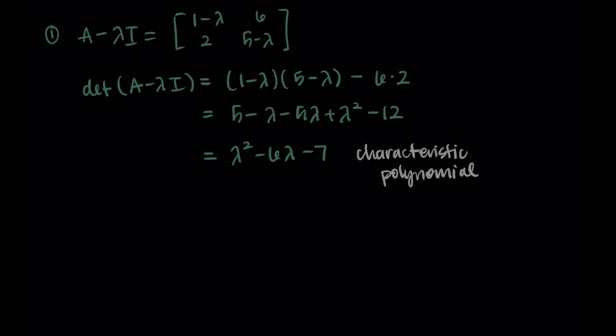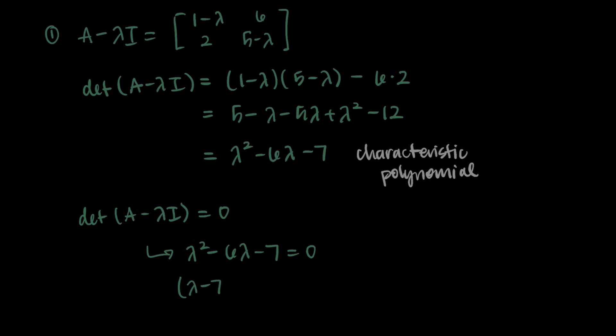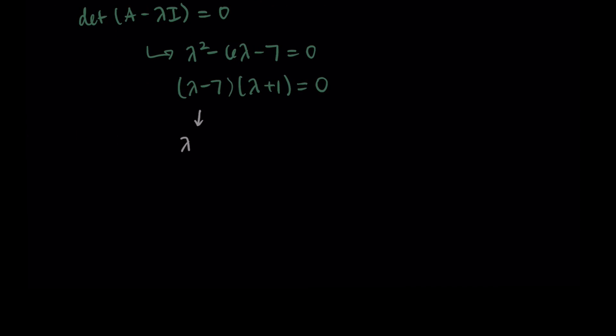Our goal is to find the eigenvalues, so we're going to take this characteristic polynomial and set it equal to zero: lambda squared minus 6 lambda minus 7 equals zero. Factoring this, I get lambda minus 7 times lambda plus 1. Setting each of these terms equal to zero results in our two eigenvalues: lambda equals 7 and lambda equals negative 1. So we have two distinct eigenvalues, which tells us that the diagonalization will work.